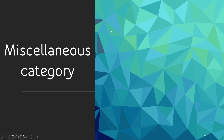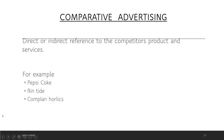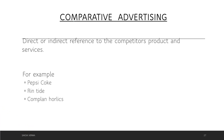So let us straight away go to the categories. The first one is comparative advertising. Comparative advertising means that in your advertisement you are showing a direct or indirect reference to the competitor's product and services. If you see an ad where you are showing that your product X is better than product Y, whether in features or in price, that is known as comparative advertising.